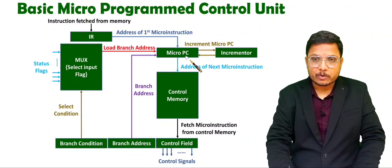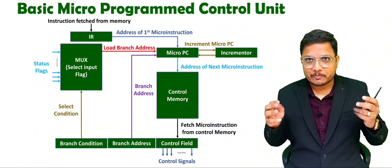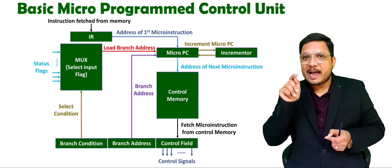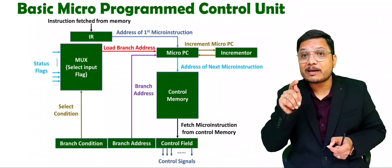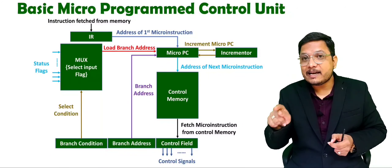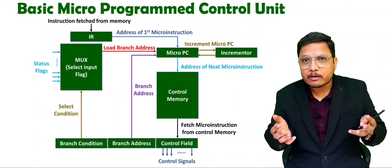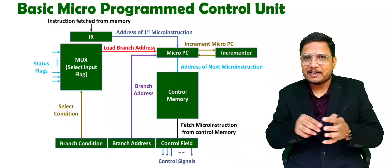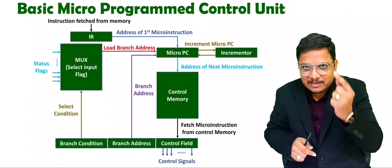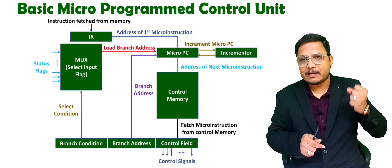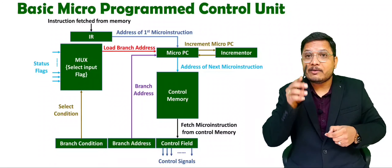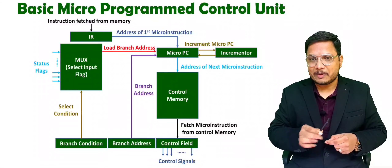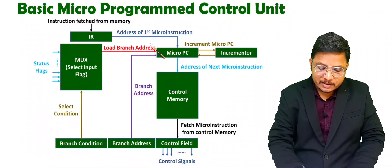Micro-PC means micro-program counter. Micro-PC is similar to PC, which means program counter. The job of the program counter is to indicate the address of the next instruction. So, micro-PC will indicate the address of the next micro-instruction. First, the given instruction which we have fetched from memory goes inside IR. IR generates the first address of the micro-instruction and that will be given to the micro-PC. So, the micro-PC now takes the address of the first micro-instruction from IR.